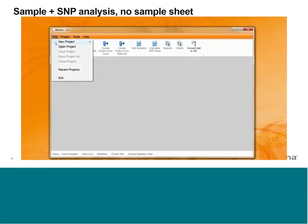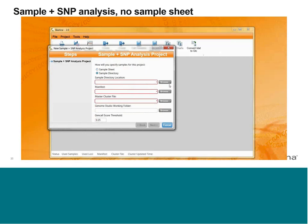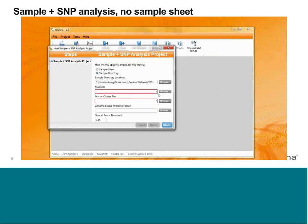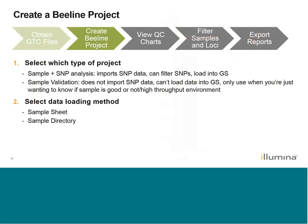Here's an example of creating a project with a sample sheet that has the path column. I create a project, locate my sample sheet — the path is already in there, so I just put in my manifest and cluster files. There are just 12 samples, so it's pretty fast. It loads the cluster positions from the cluster file, and at the end I have my 12-sample project containing all the loci information. You can also toggle to sample directory and select where your GTC files are stored, then put in your manifest and cluster files to complete project creation without a sample sheet.